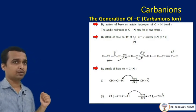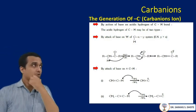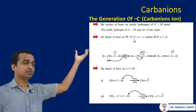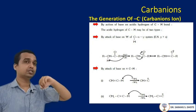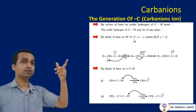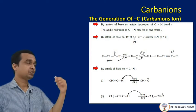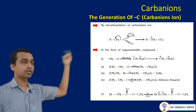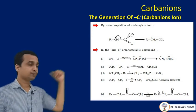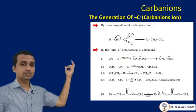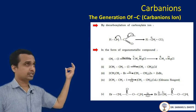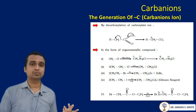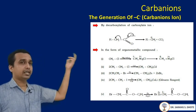Now, the generation of a carbanion and how it is formed. The first method is by the action of a base on an acidic hydrogen. Acidic hydrogen is present in triple-bonded compounds — those that easily donate their hydrogen. If a base attacks this acidic hydrogen, there is formation of a negatively charged carbanion. The second method is by decarboxylation of a carboxylate ion — removal of CO2 is known as decarboxylation — which also generates the carbanion.